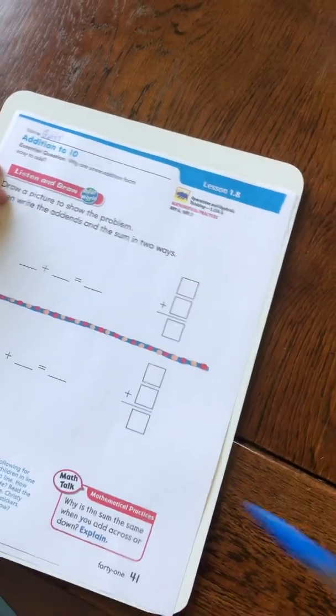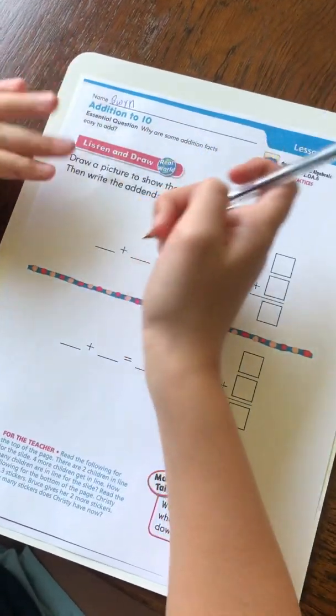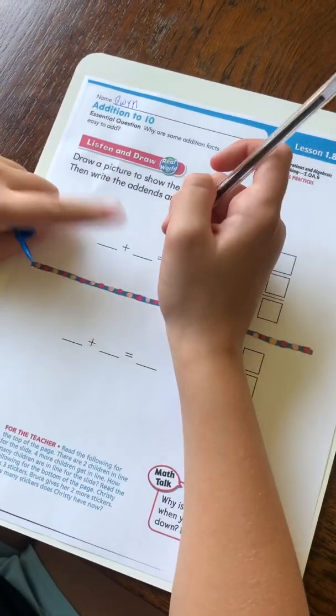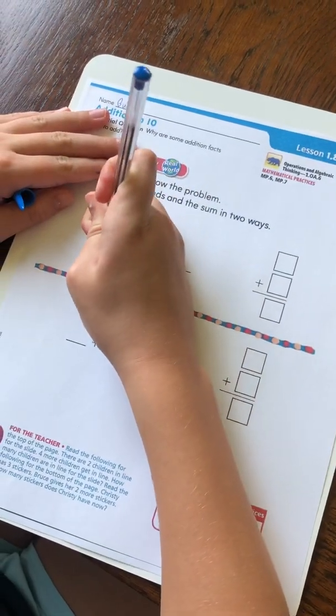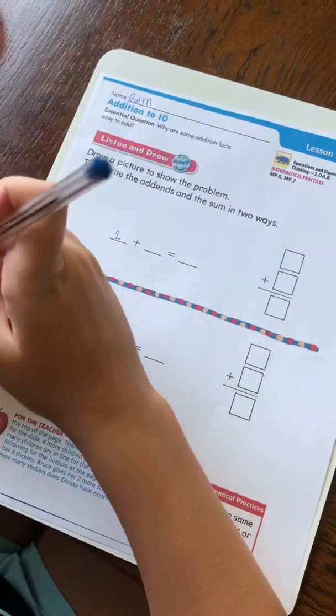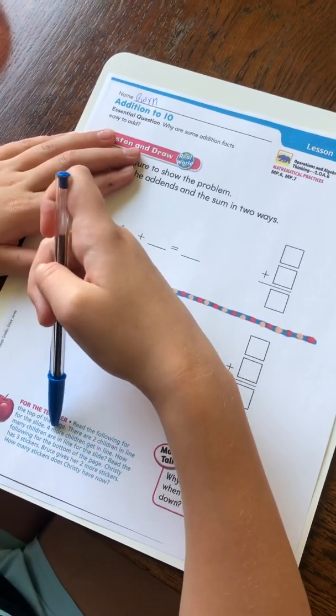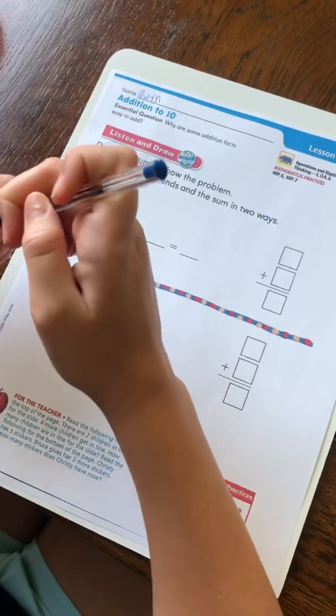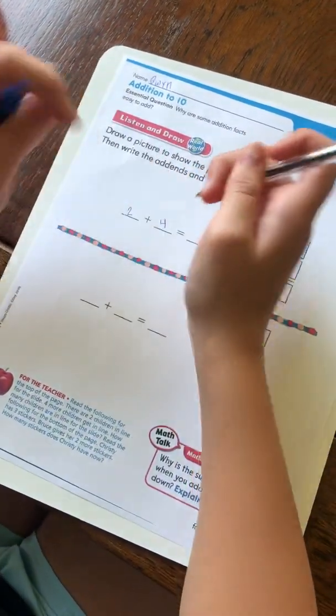What are you going to do? Okay, well since it says there are two children in line, I can write the two children in the front because they're in front of them. Okay, and then it said, for the slide, four more children get in line. So I'm going to write four. So it looks like they're behind them.